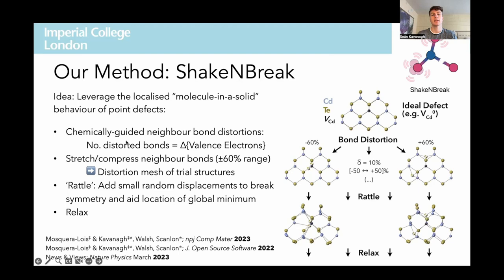For example, the fully ionised charge state of cadmium vacancies is minus two, where we have no excess charge. In a neutral state, however, we now have two excess holes present, and this will often lead to a reconstruction involving movement of two of the defect neighbour atoms — in this case, two tellurium atoms coming closer together and forming a strong dimer bond. In our method, we apply a range of distortions to the defect neighbour atoms using the value of the excess charge to dictate the number of bonds to distort, which typically gives a good starting point close enough to the minimum that gradient optimisation will find it if present.